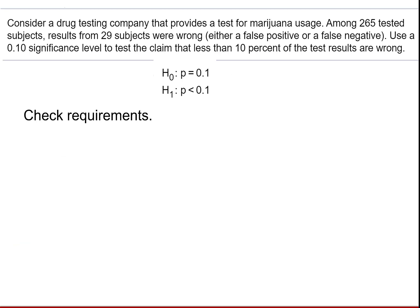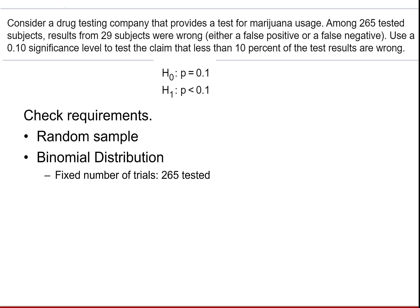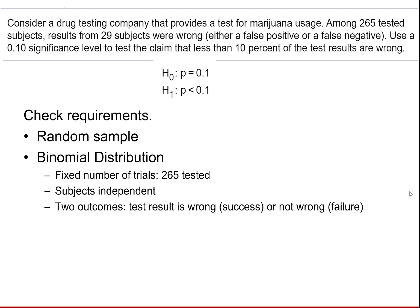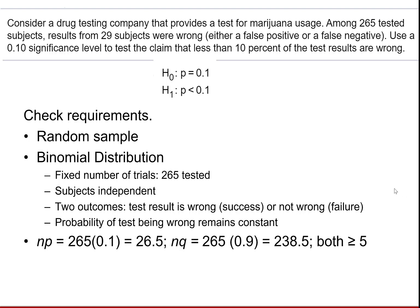Now we want to check our requirements. We have a random sample. We have a binomial distribution — there's a fixed number of trials, the subjects are independent of one another, there are two outcomes (either the test is wrong or it's not wrong), and the probability of being wrong remains constant. We then check our expected successes and expected failures using the value specified in the null, and both are greater than or equal to 5.